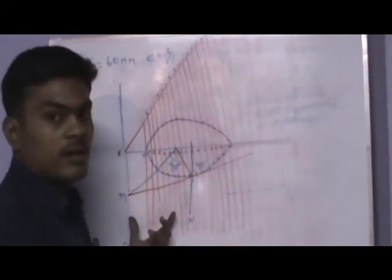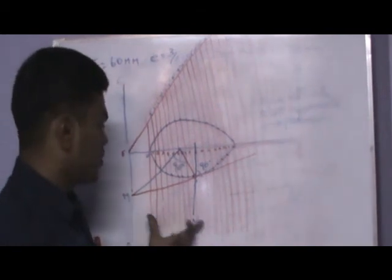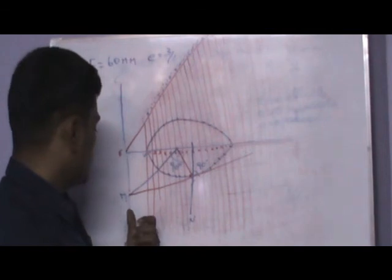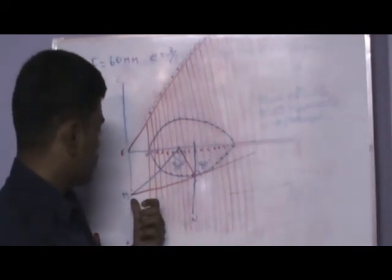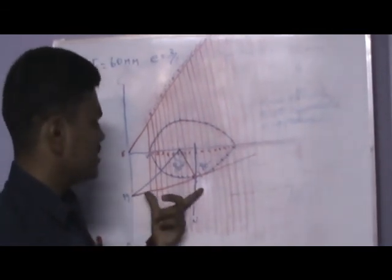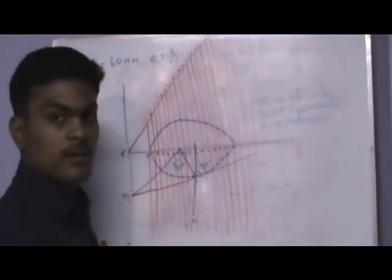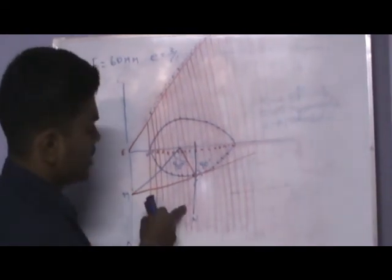To draw a tangent or normal, to draw a normal, take the tangent as base and draw a perpendicular line. You will be getting the normal.